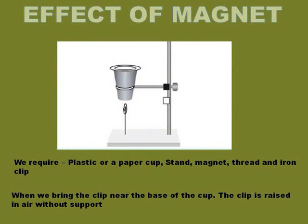Effect of Magnet — Activity: For this activity we require a plastic or paper cup, a magnet, a stand, an iron pin, and a thread. Fix a paper cup on the stand as shown in the figure, and place the magnet inside the cup and cover it with a paper so that the magnet is not visible. Now attach a thread to the clip and fix it to the base of the stand.